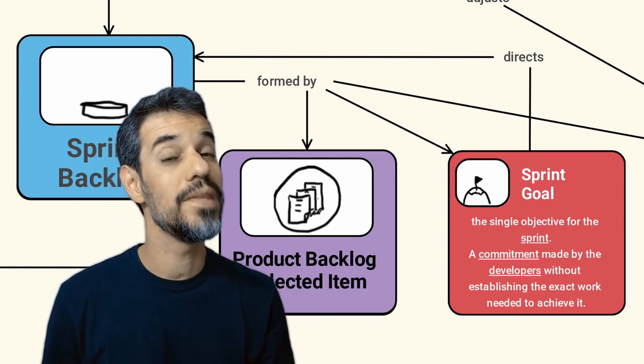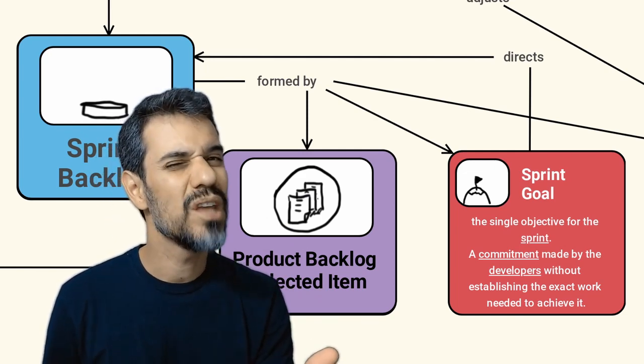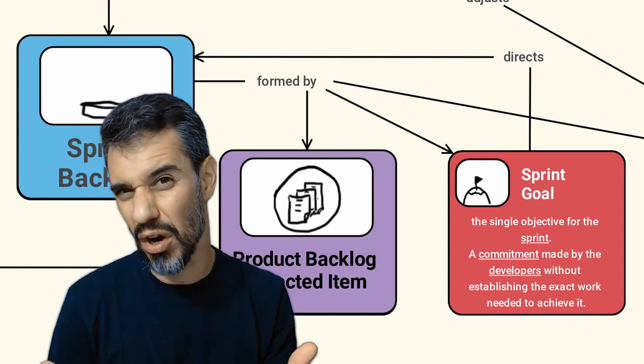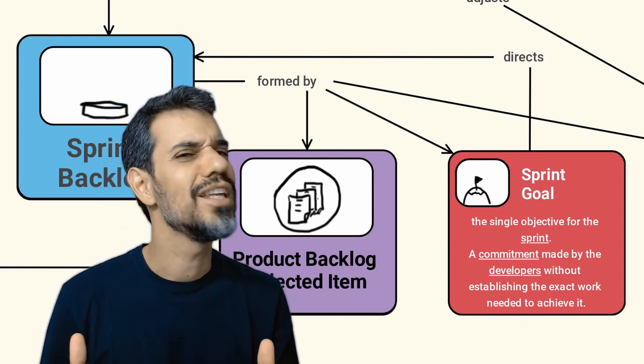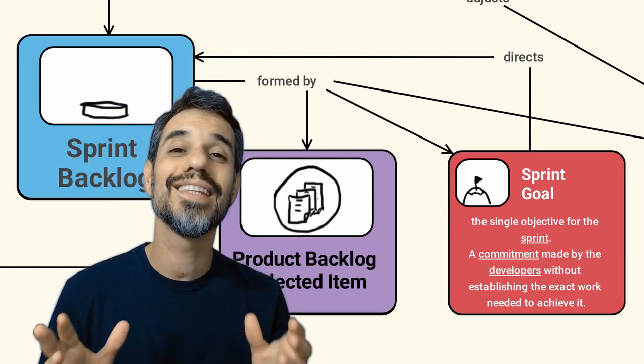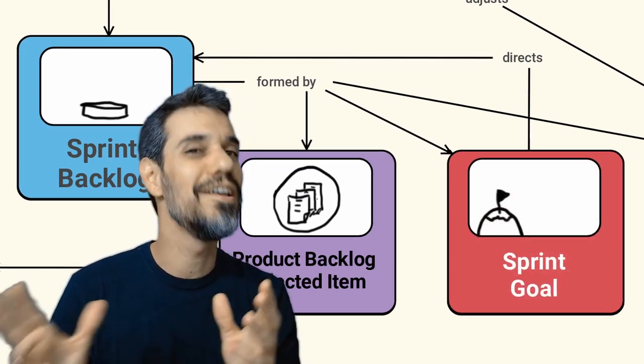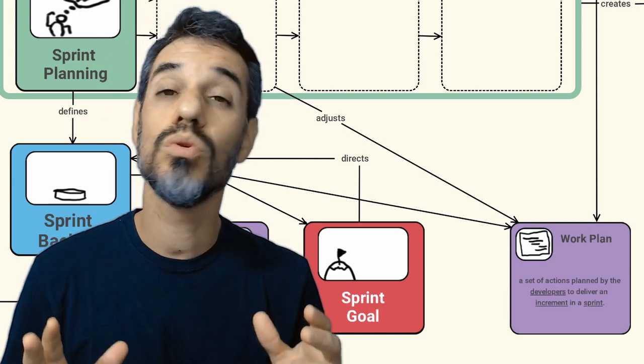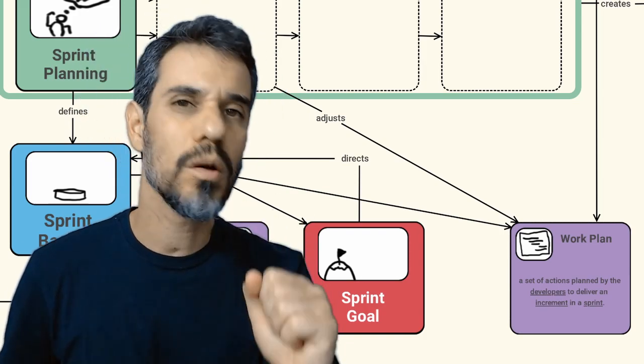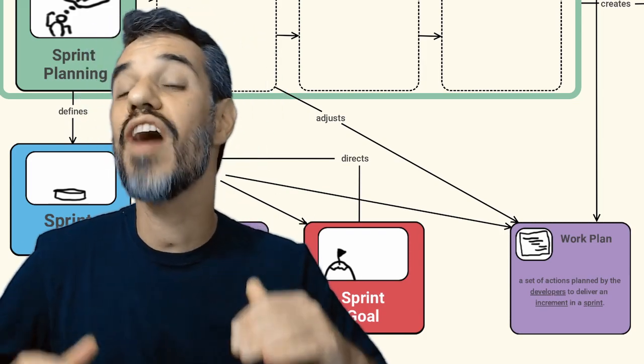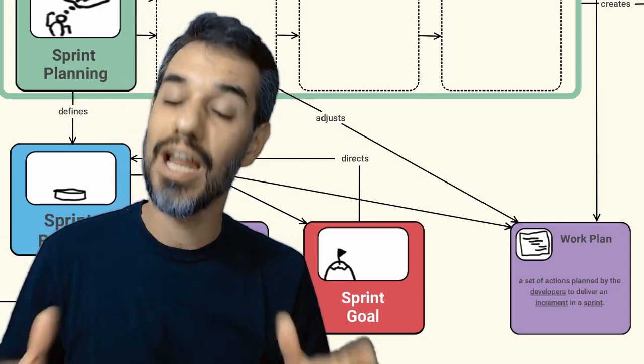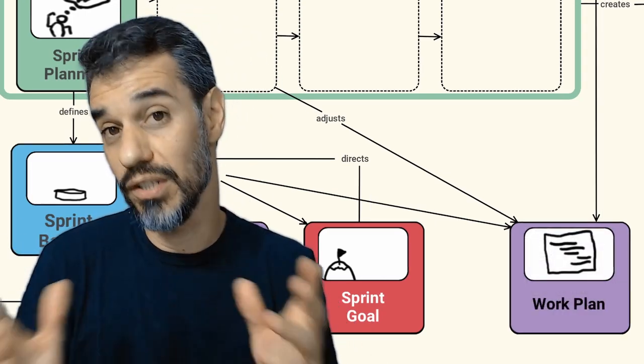The goal should describe the outcomes of the sprint without describing the outputs of it. In other words, it should not describe what the team must do, but what the team must deliver. And we may also find in a sprint backlog a work plan. The plan is the set of actions planned by the developers to be done during the sprint.